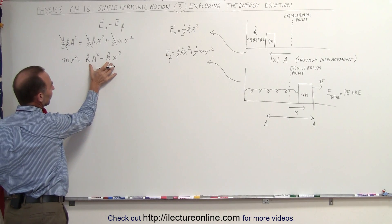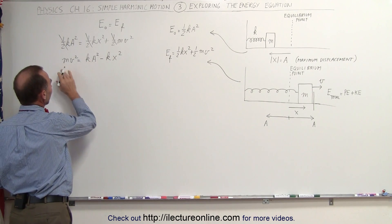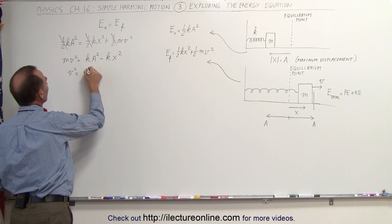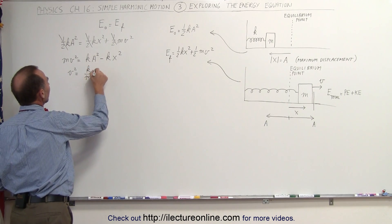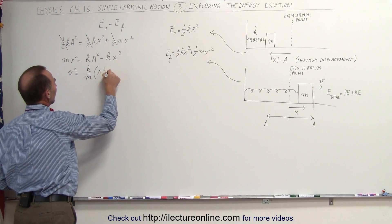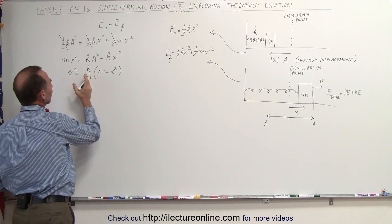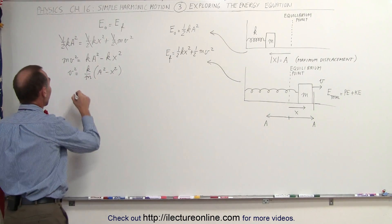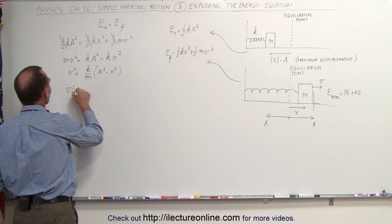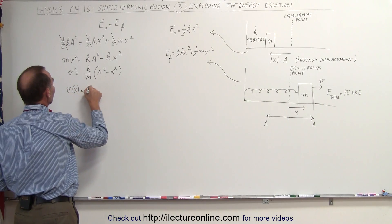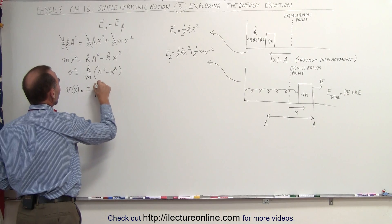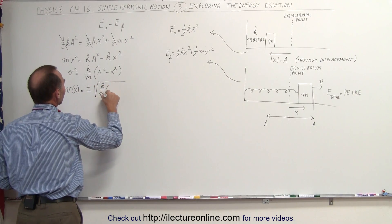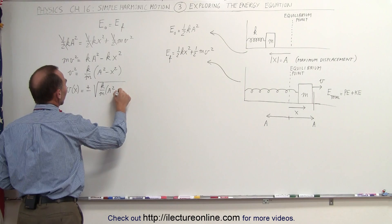Notice we can factor out a k on the right side and divide both sides by m. That gives us v squared is equal to k divided by m, times the quantity A squared minus x squared. Now when we take the square root of both sides, we get v as a function of x, equal to plus or minus the square root of k over m times the quantity A squared minus x squared.